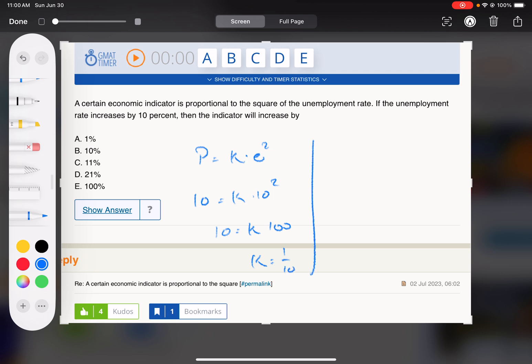Because then you can use that k in the next step to see how much this indicator changes when we increase the unemployment rate by 10%. So now it's 11 squared. These are not the best numbers, but that's 121 divided by 10 is 12.1.